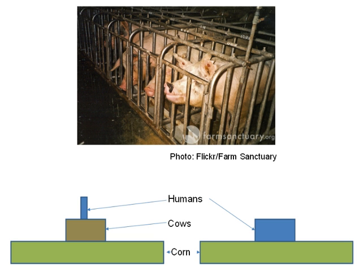Every step removed from the plants that you are, the fewer organisms you can support at that level. This is relevant to humans because we can eat plants and we can eat animals who eat plants. Which means that if we want to eat more animals, we have to increase our production of plants to feed them even more.